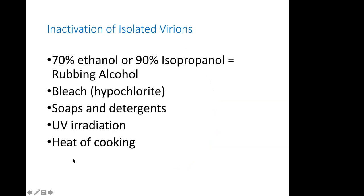These viruses are inactivated by 70% ethanol and 90% isopropanol — the rubbing alcohol you'd get at CVS or Walgreens — by bleach, by soap and detergents because the membrane is lipid, by ultraviolet radiation from a UV lamp, and by full sunlight as well, though that hasn't been directly studied with coronavirus. The heat of cooking will also inactivate the virus. At this point let me pause and open up for questions, but if there are none I'll go on to vaccines.